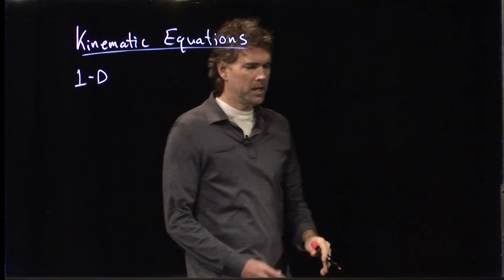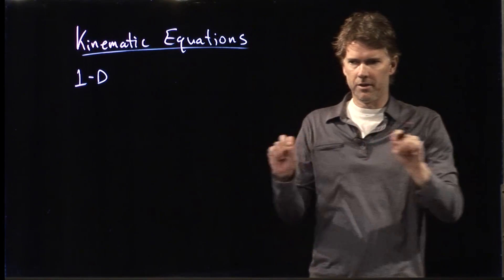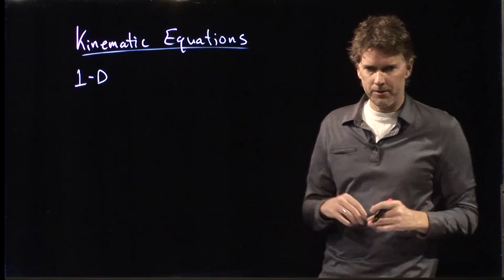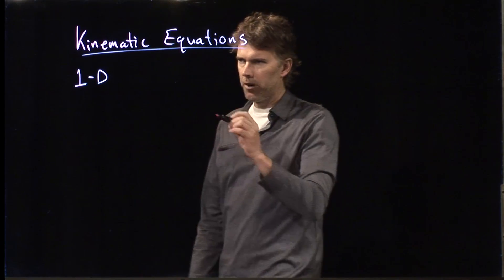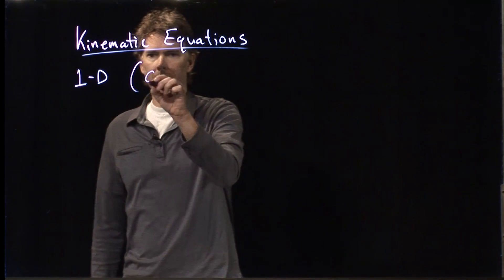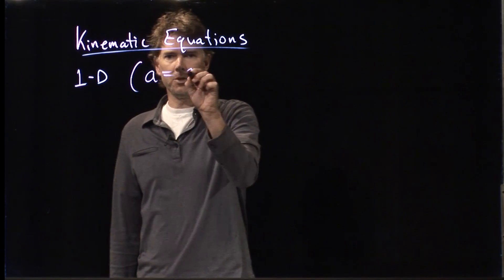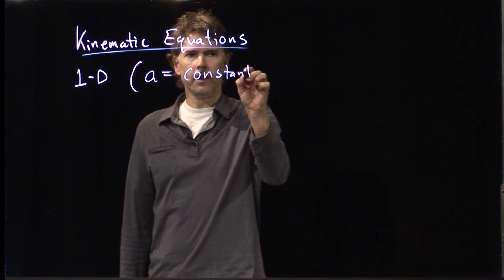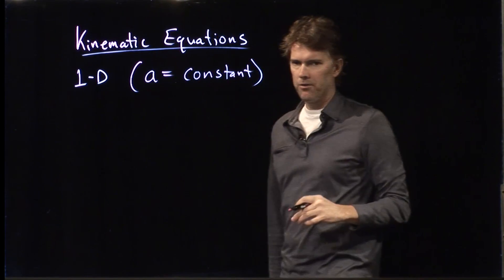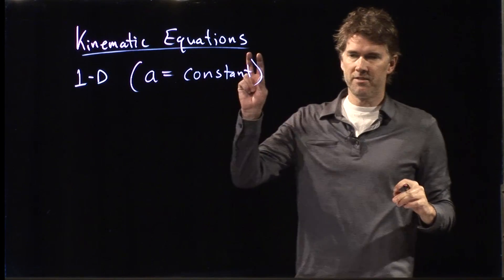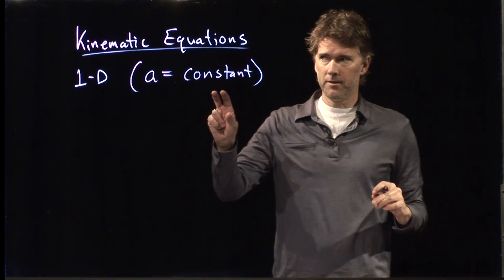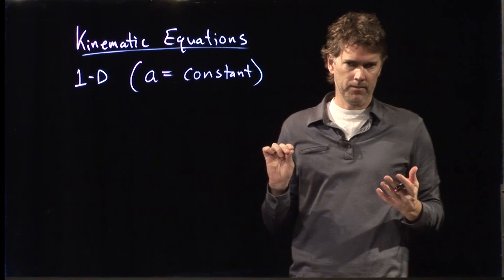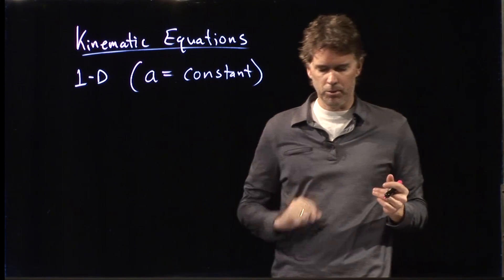In 1D, we're just going to talk about horizontal or vertical motion — we're not going to combine the two just yet. And we're going to make one more important assumption, which is that the acceleration is constant. It turns out that if the acceleration is not constant, then you can't use the kinematic equations that we're going to talk about. So this is an important constraint.